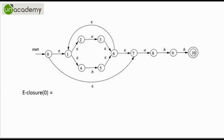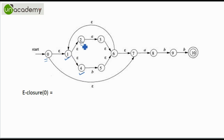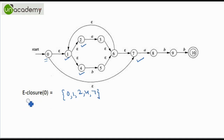So let us see what the epsilon closure of 0 is. State 0 is right here and let us mark the states that we can reach from 0 on epsilon transitions alone. We can reach 1, 2, 4 and 7 on epsilon transitions alone. So the epsilon closure of 0 will contain 0, 1, 2, 4 and 7. Epsilon closure of a state always contains the state itself because you can loop on epsilon and reach it by epsilon moves.